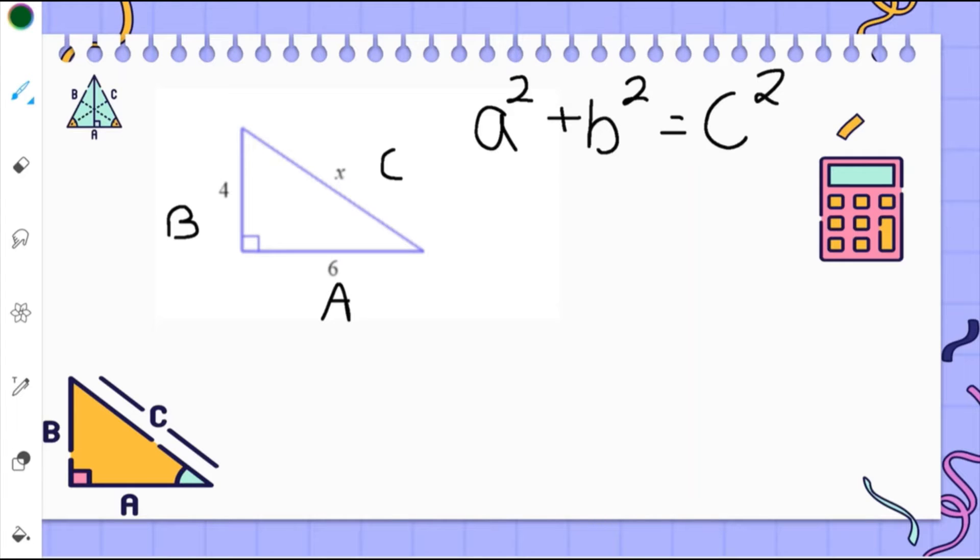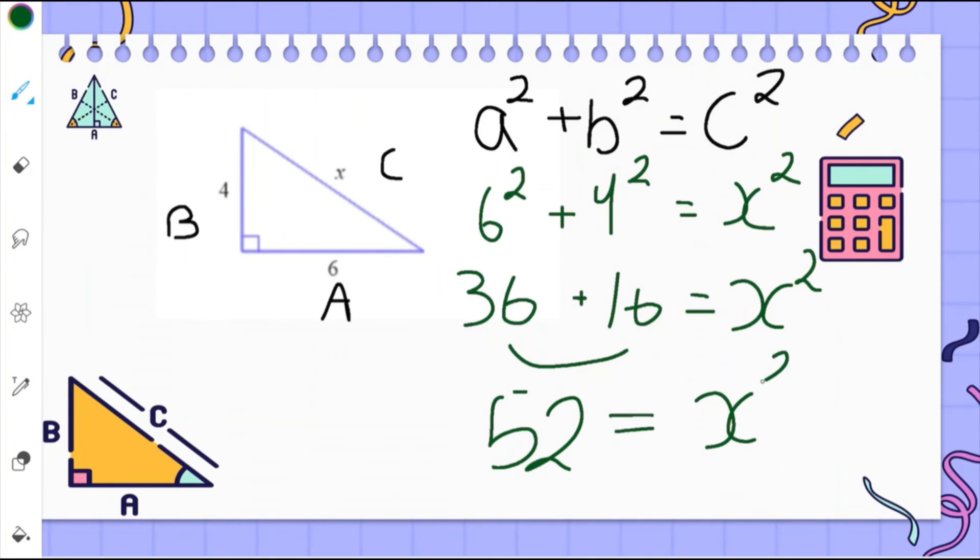Now we're going to replace the letters by the numbers. So it's going to be 6 squared plus 4 squared equal x squared. So 6 squared is 36 plus 16 equals x squared. And now we're going to add both of them together. So it's going to be 52 equal to x squared.